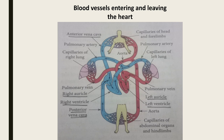The second one is the posterior vena cava, also known as the inferior vena cava. This posterior vena cava brings the blood from the lower region, that is below the heart. The deoxygenated blood from the organs present below the heart is collected by the posterior vena cava, which then moves towards the heart. These two are the blood vessels entering the heart.